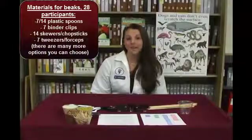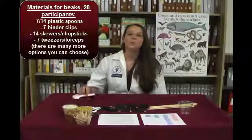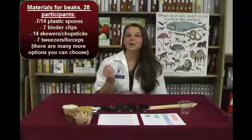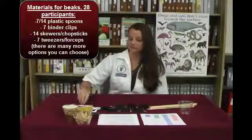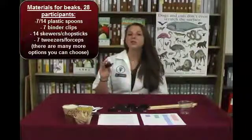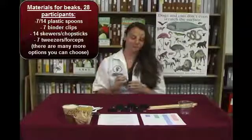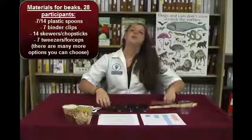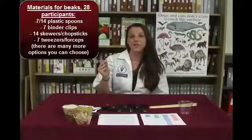The number of materials described for this activity is designed for a group of 28. When it comes to beak choices, we've chosen spoons — seven of these, though you can give each child two, so you'll need 14. We used binder clips, or you could also use clothespins — you'll need seven of these. You can use skewers or chopsticks, and you'll need 14 of these, two per child.